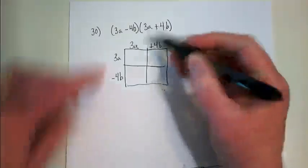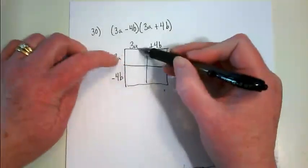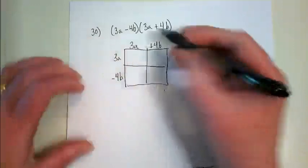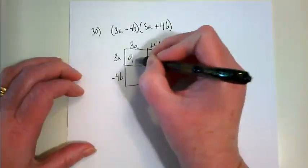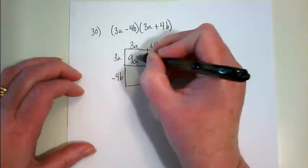And then inside the box, as we multiply these two terms together, their result goes here. So 3 times 3 is 9, a times a is a squared.